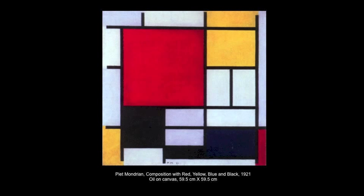Mondrian's painting also manipulates these formal elements and principles of design, but to different ends. Clearly he has no interest in representing reality in a traditional sense, but Mondrian is trying to use the ideas of color, balance, unity, and variety to evoke meaning through the use of abstraction.